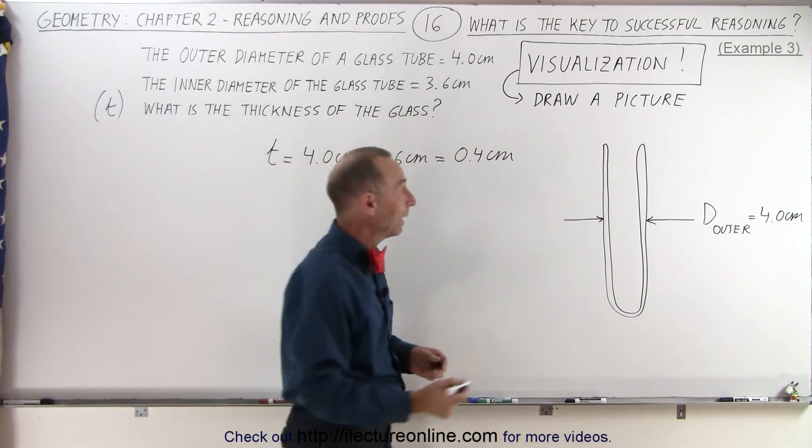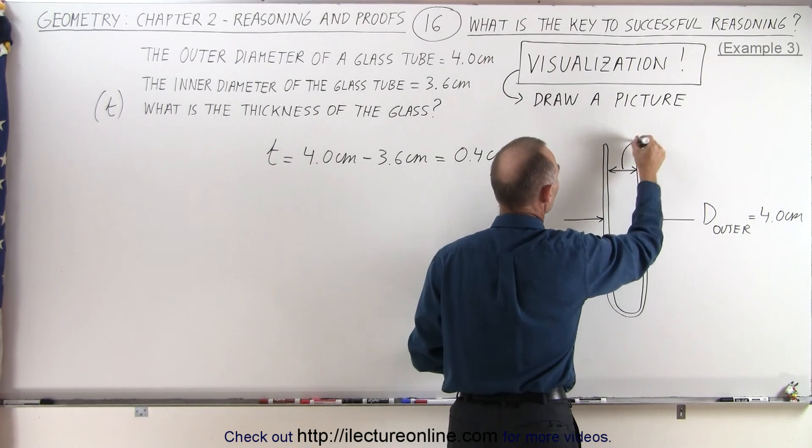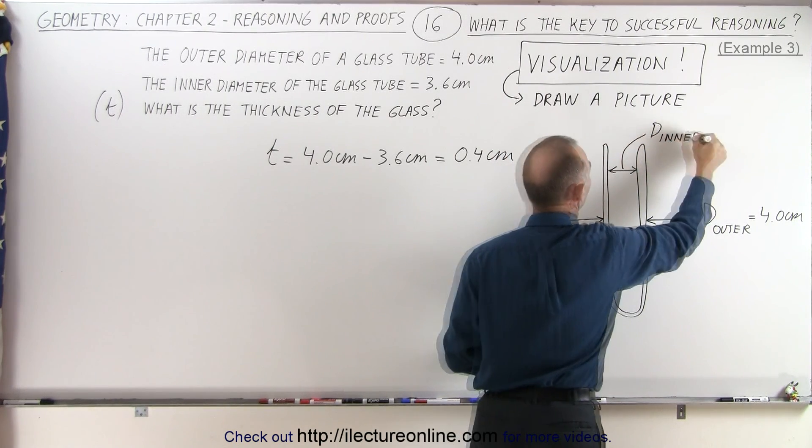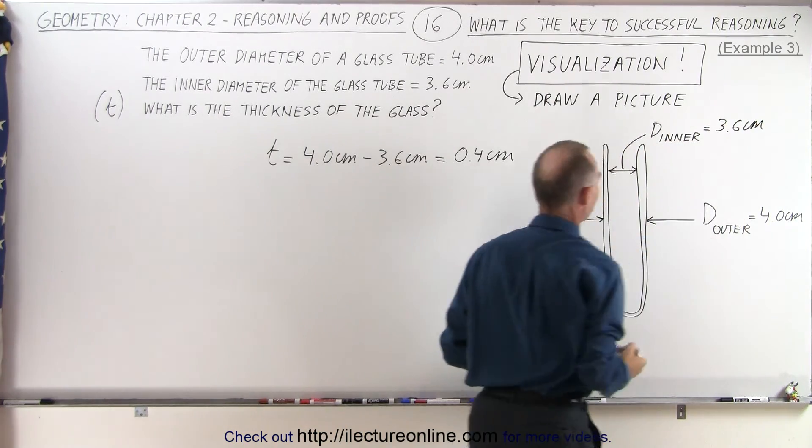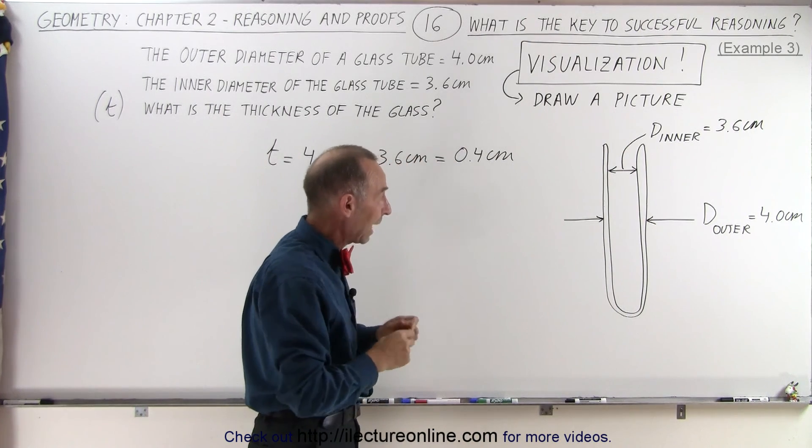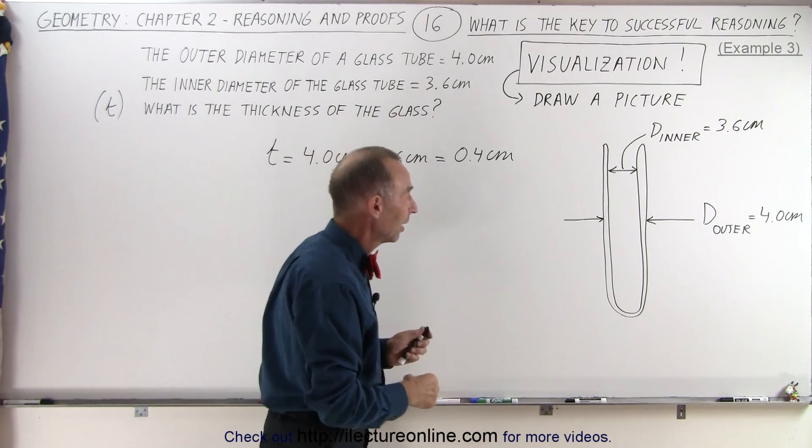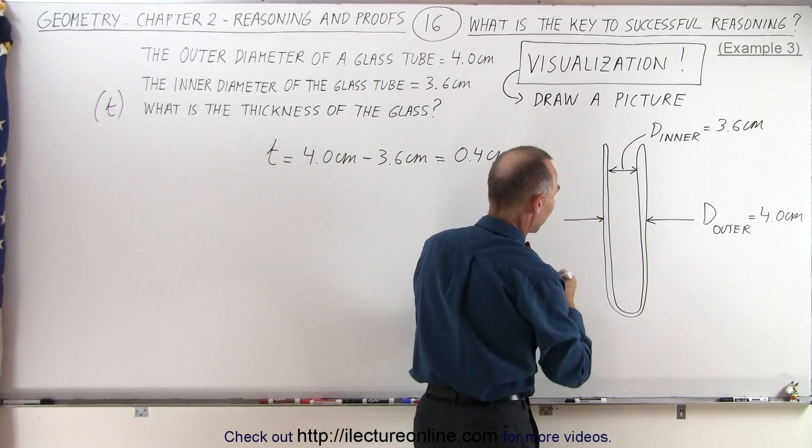And then they went ahead and measured the inner diameter. So, this would be D inner, and that was equal to 3.6 centimeters. And now they're asked to measure, or to deduce from that, the thickness of the glass. And so, you realize that the thickness would be this one right here, which could also be seen on the other side.